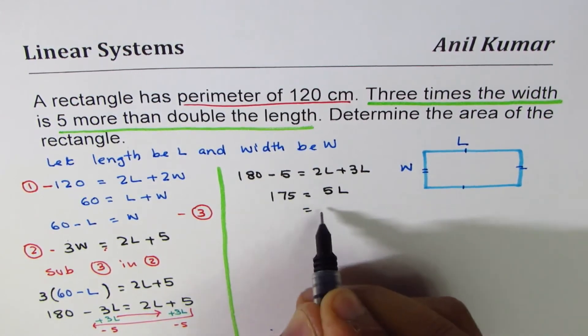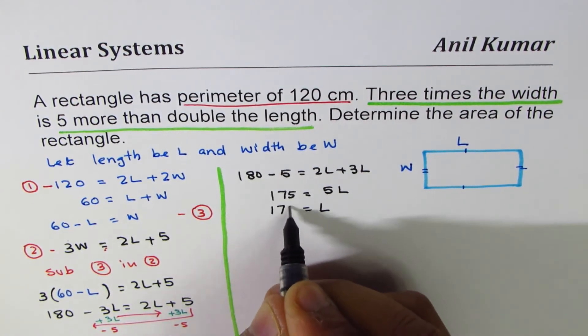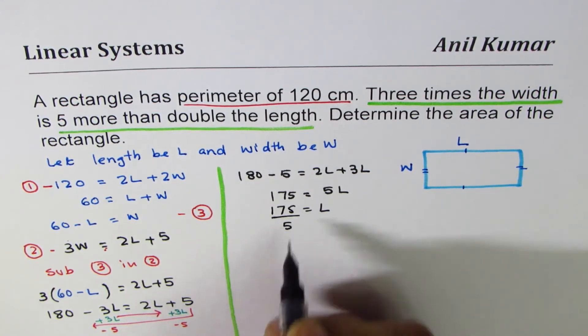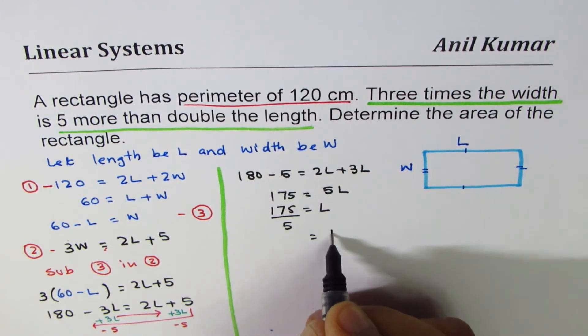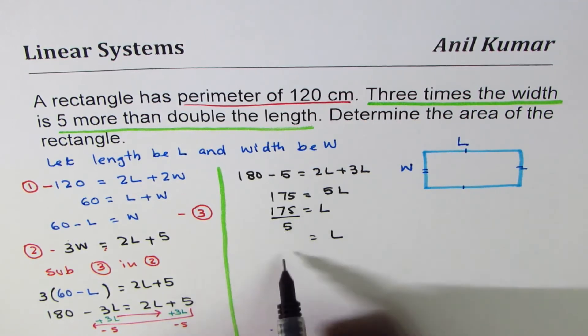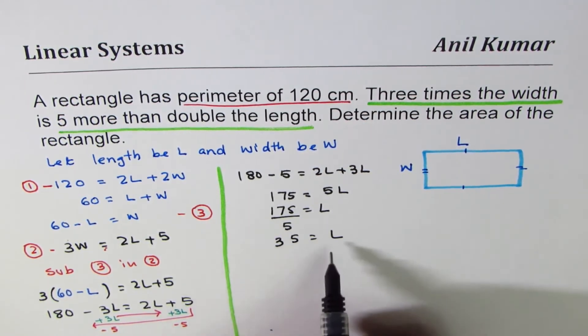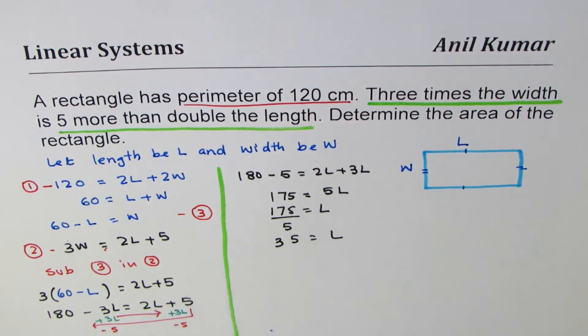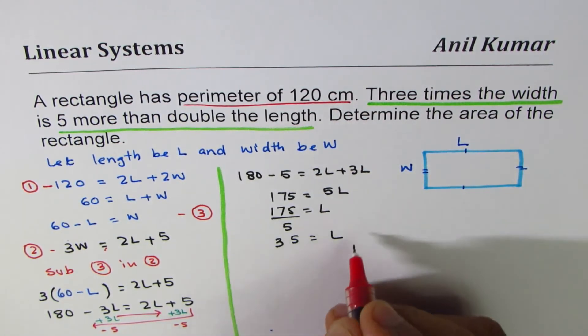Dividing by 5, we get L = 35. So length is 35 centimeters. We'll call this equation 4.